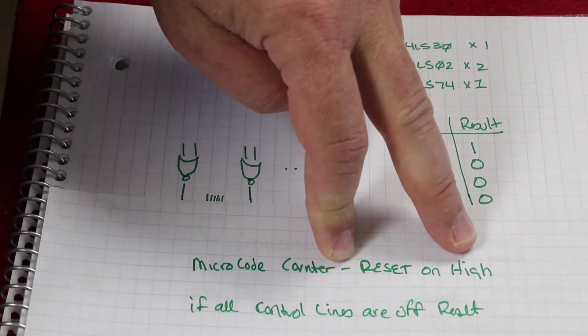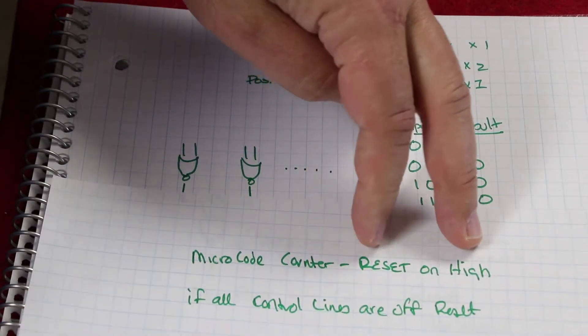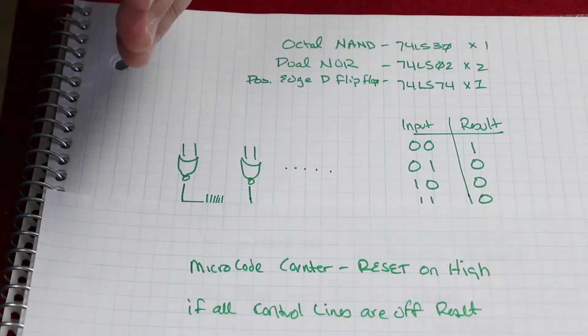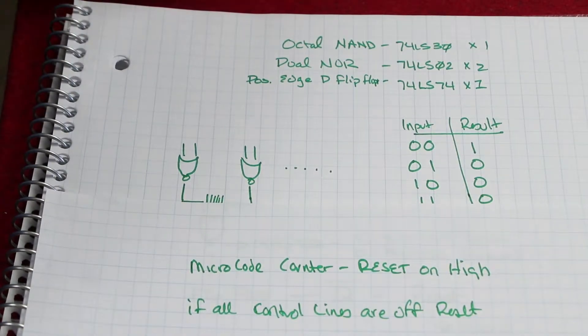The problem here is that we have a situation where if there are no microcodes running, those are all low values. So we're going to have to do some kind of inverting or something at some point.